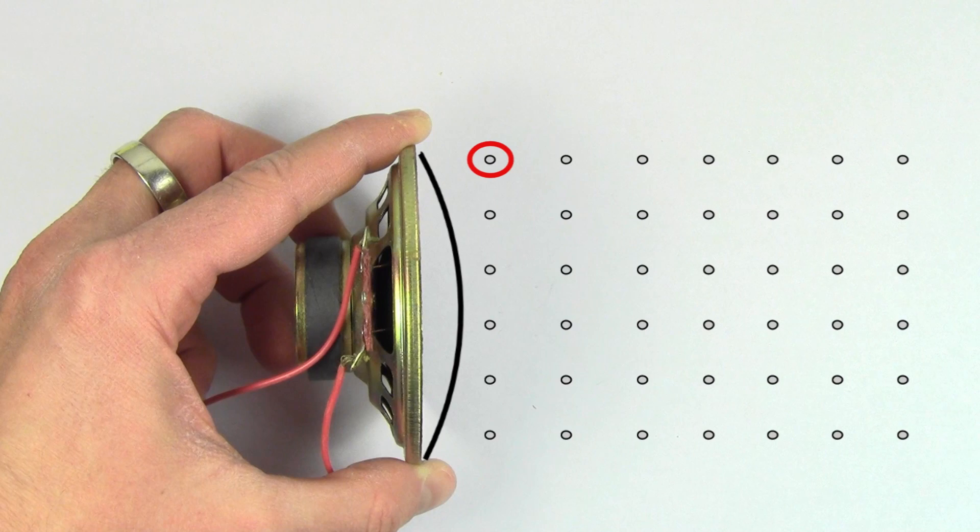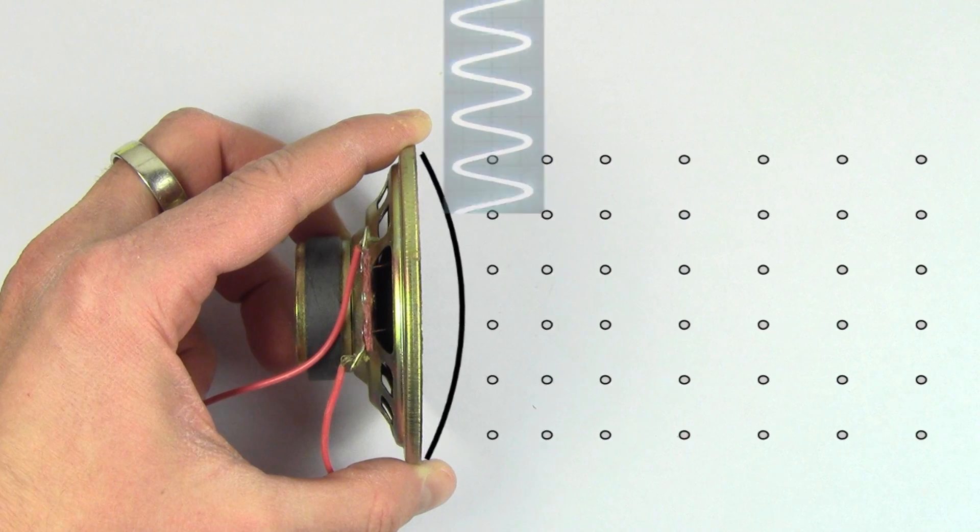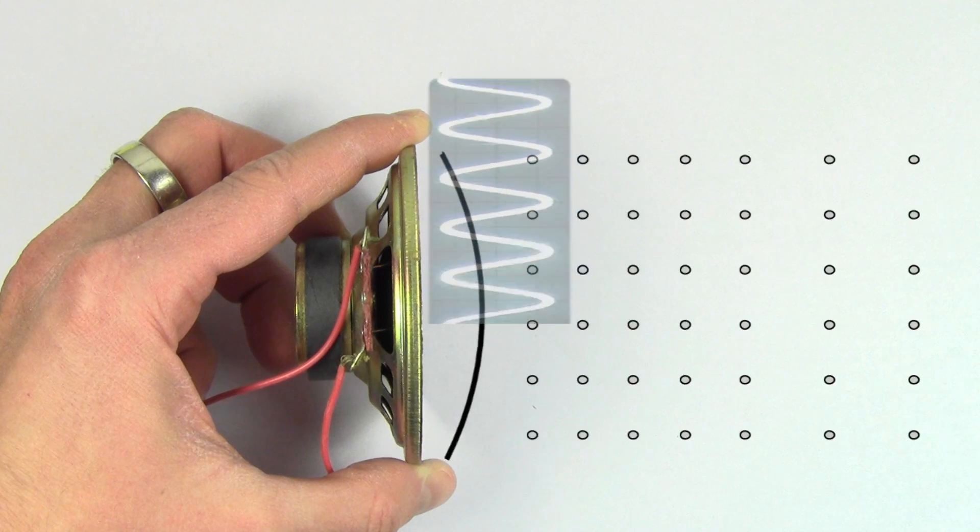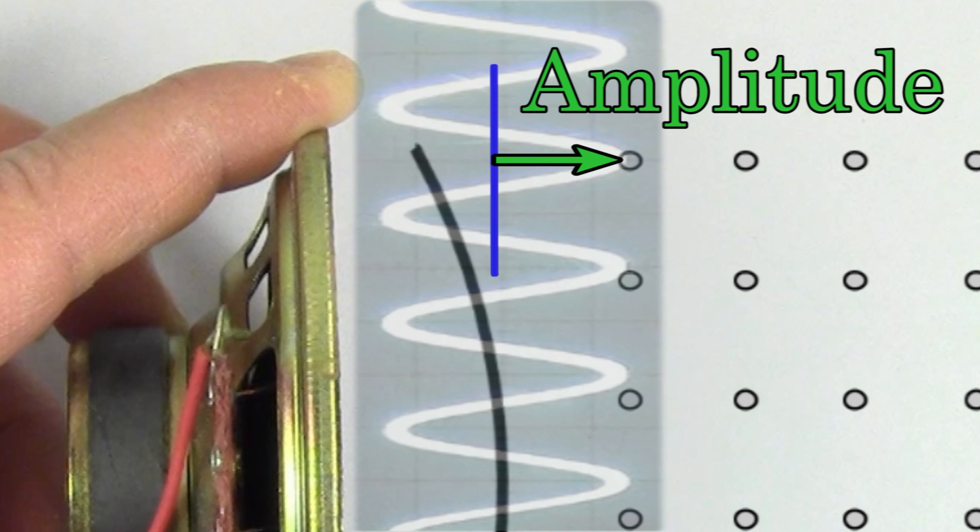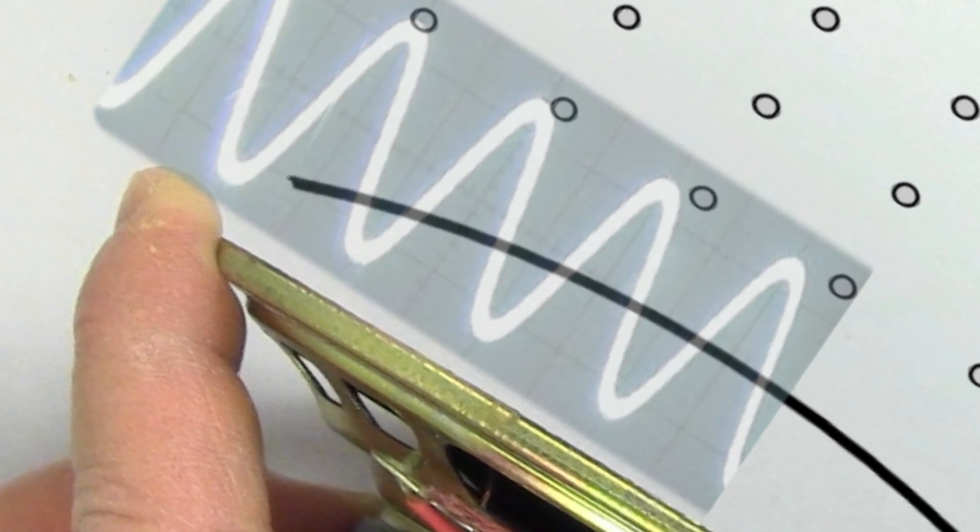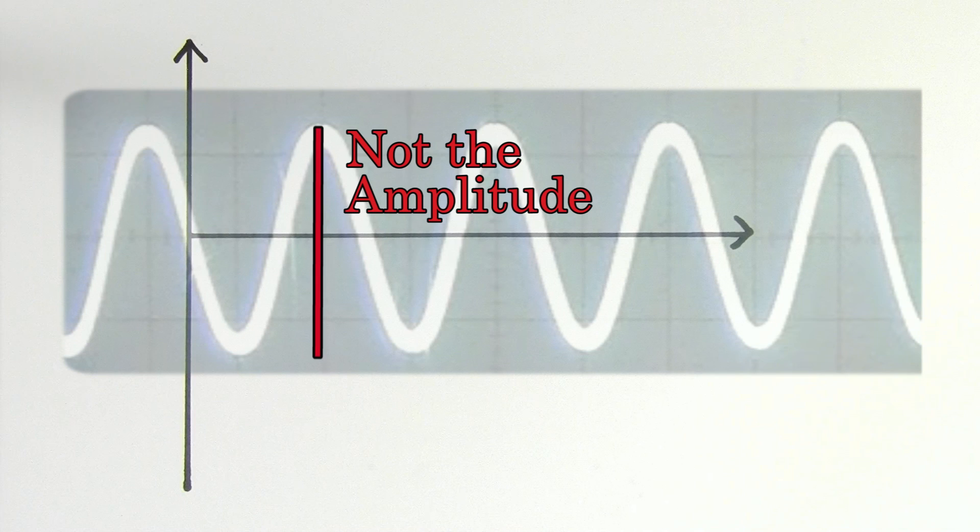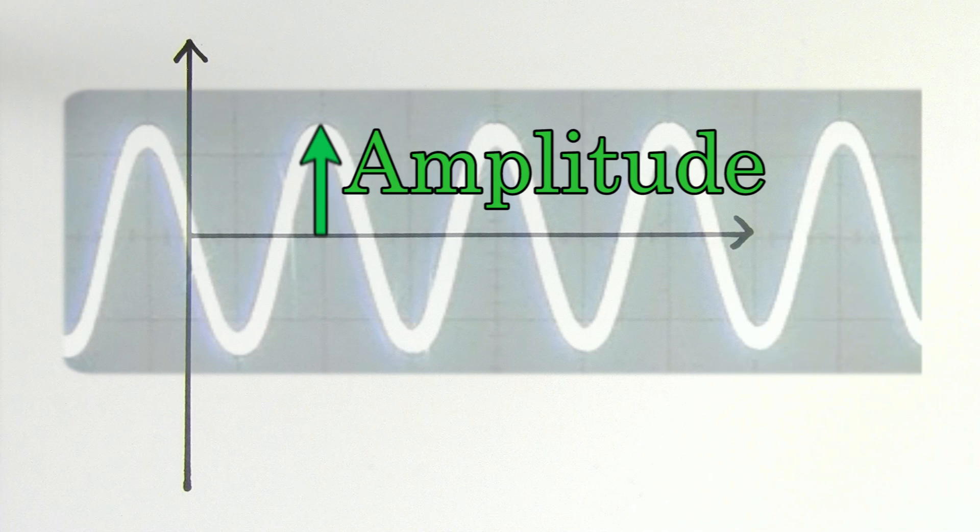If we turn up the volume, we see that the oscillations become larger and the sound becomes louder. The maximum displacement of the air molecule from its undisturbed position is called the amplitude. Be careful, the amplitude is not the length of the entire displacement. It's only the maximum displacement measured from the equilibrium position.